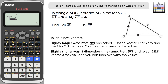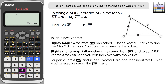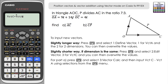To find vector AC, we go from A to O (reverse of OA) and then along OC, so it's minus OA plus OC — that's vector C minus vector A. In vector calc, input Option 5 (vector C) minus Option 3 (vector A) and press equals. The result is vector AC: negative 5 for the i-component and negative 14 for the j-component.